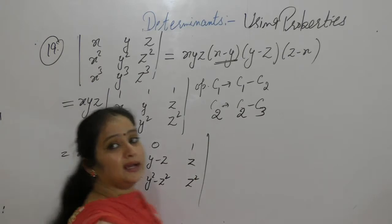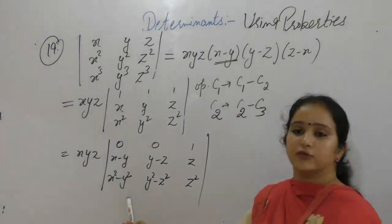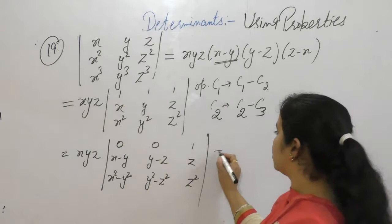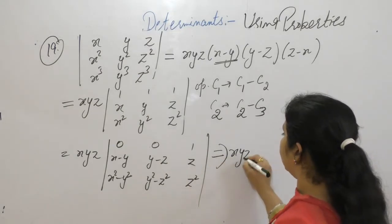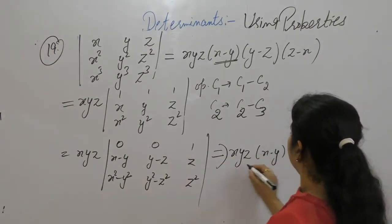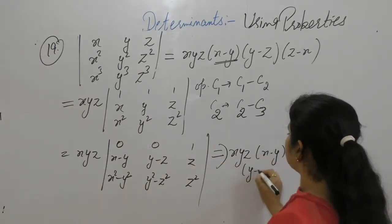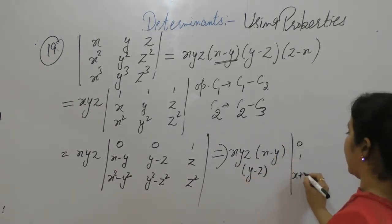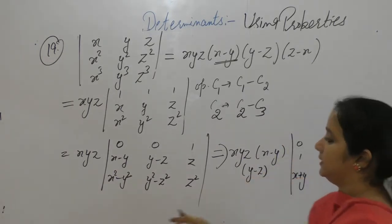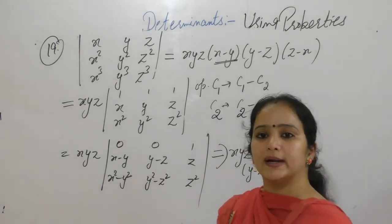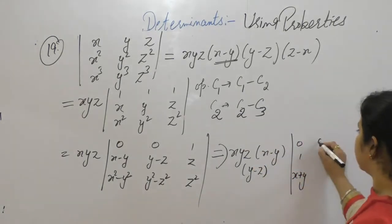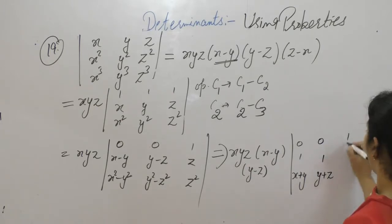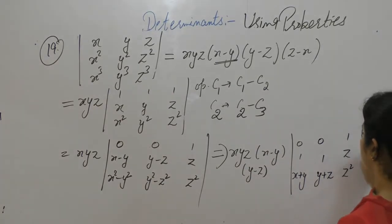Now take (x minus y) common from C1 and (y minus z) common from C2. So the matrix becomes: first row x, y, z; second row x minus y, y minus z, 0; third row 1, x plus y — using the identity a squared minus b squared equals (a minus b)(a plus b) — so 0, 1, y plus z. The last column retains 1, z, z squared.